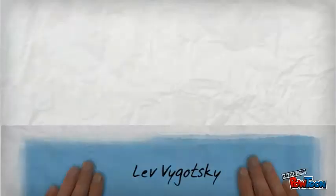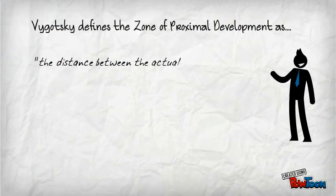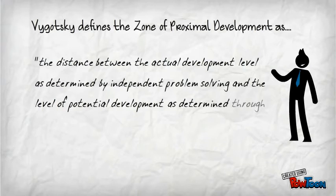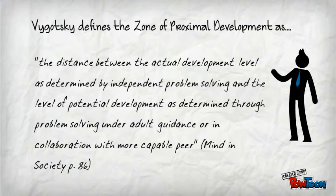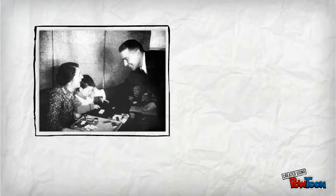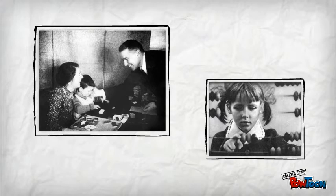Lev Vygotsky's Zone of Proximal Development. Vygotsky defines the zone of proximal development as the distance between the actual development level as determined by independent problem solving and the level of potential development as determined through problem solving under adult guidance or in collaboration with a more capable peer. This concept was part of Vygotsky's analysis on child development and attempts to point to a distinct moment in the child's development process where new learning may occur.